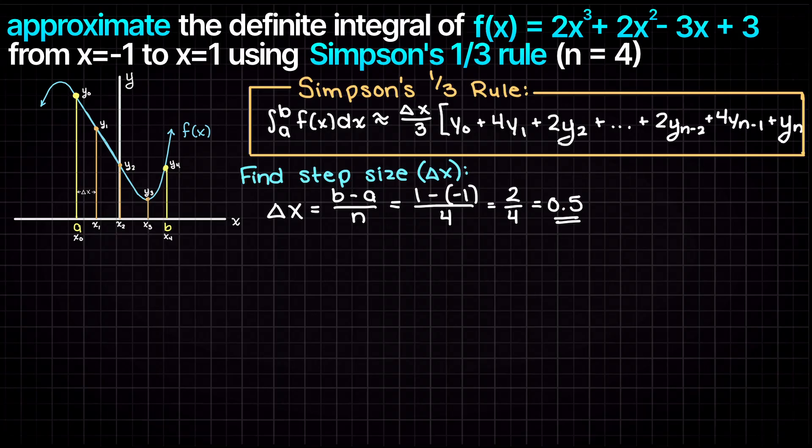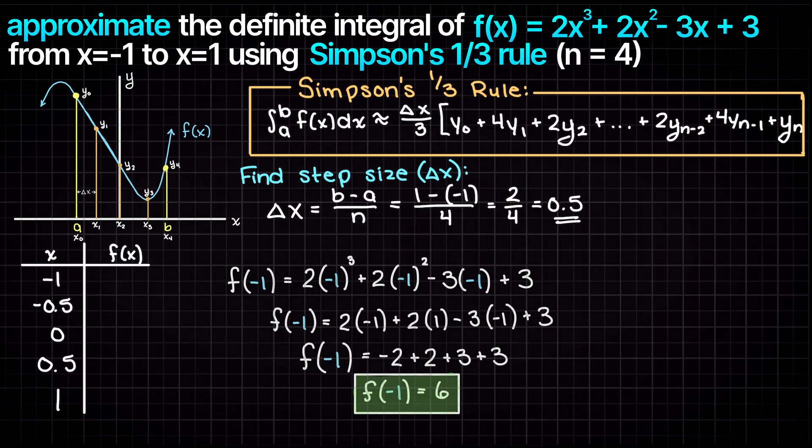Let's make a small table of input to output pairs that we need to find. Beginning at our lower bound -1, let's work out all the points that we need to find, so adding our step size every time. Then let's take a minute and plug in all of these inputs to our initial function and evaluate their outputs.